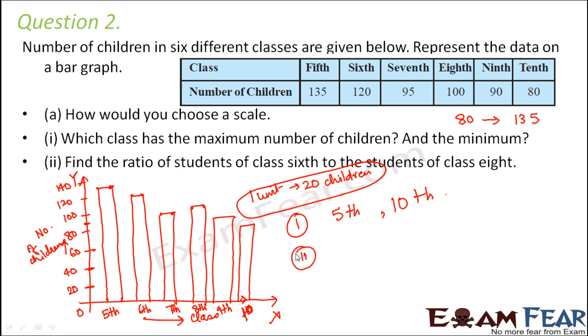Question number 2: Find the ratio of students of class 6th to the students of class 8th. Class 6th number of students by class 8th number of students. How many students are there in class 6th? 120. And how many students in class 8th? We have 100. So if we find their ratio, we get it as 6 is to 5. 2 times 6 is 12, 2 times 5 is 10. 10 times 5 is 50, 10 times 6 is 60. So the ratio would be 6 is to 5.